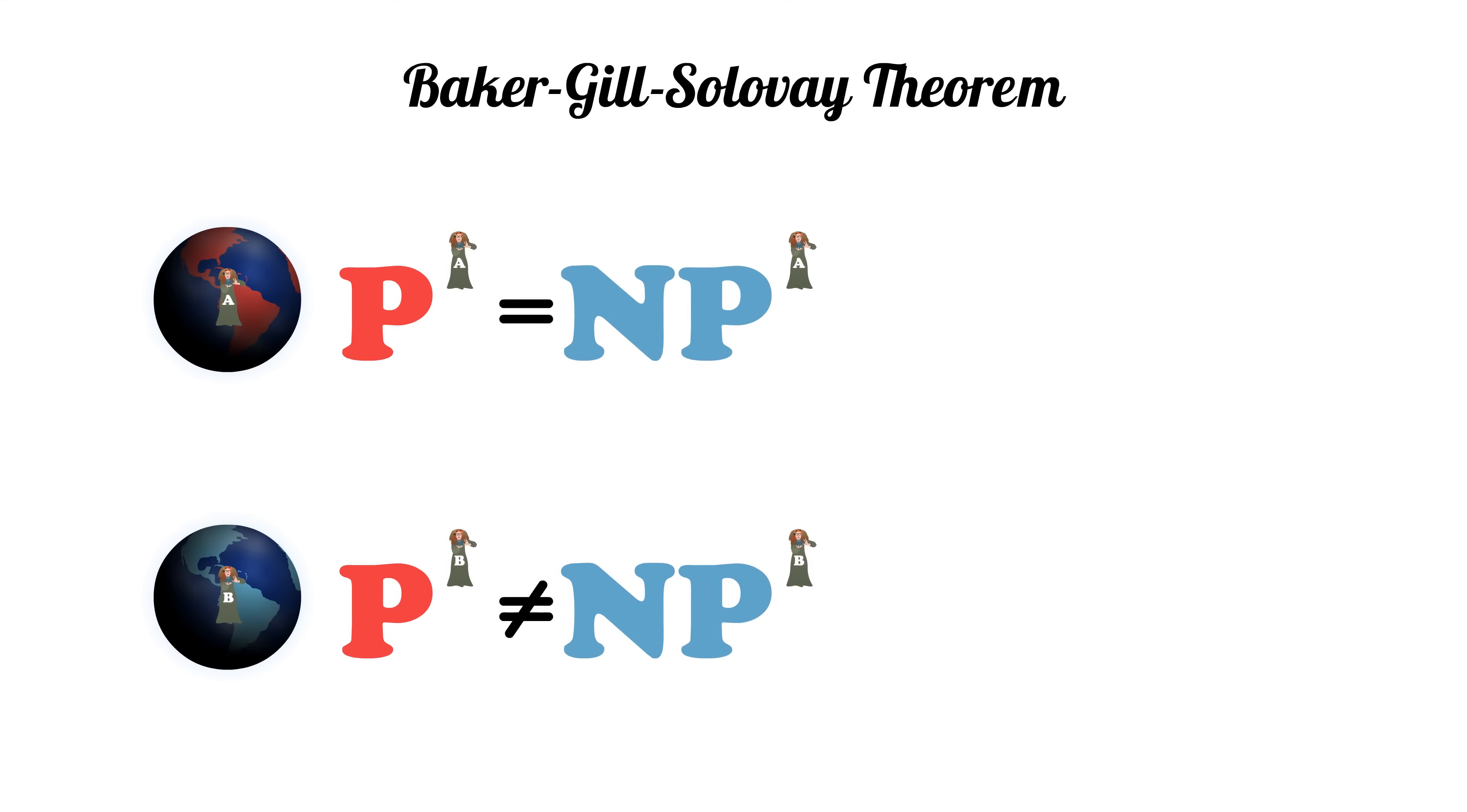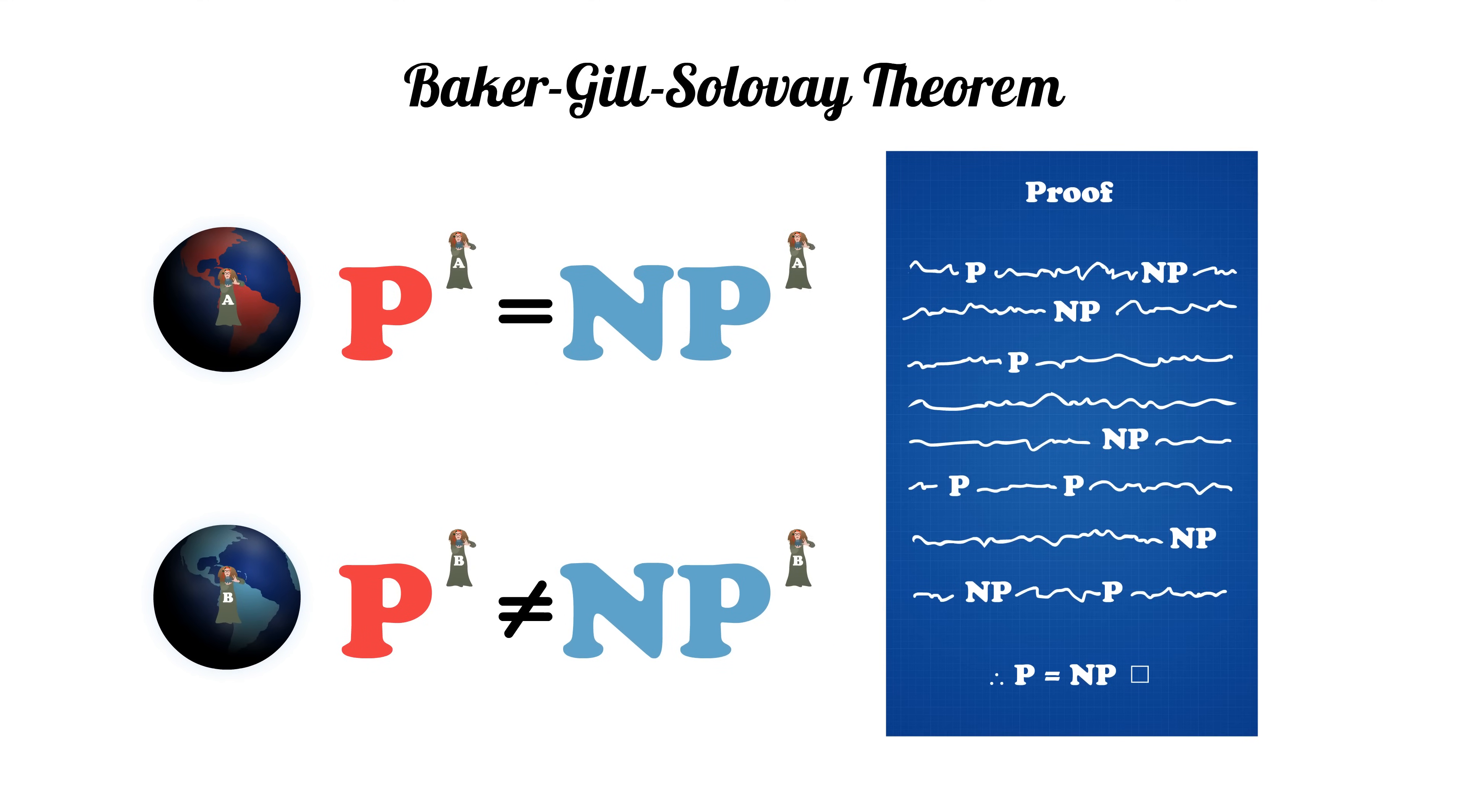Why does this matter? Let's say we're given a proof that P equals NP that is not able to separate out these oracles. We can then do a find and replace all, P with P using oracle B, and NP with NP using oracle B, to get a contradictory proof, since we know that P and NP with oracle B are not the same.